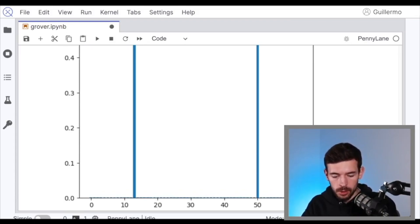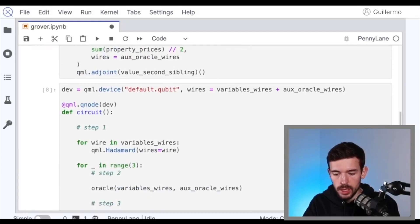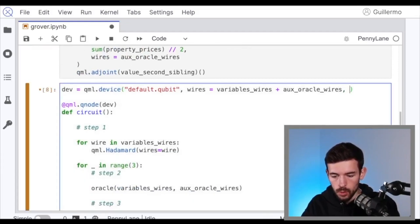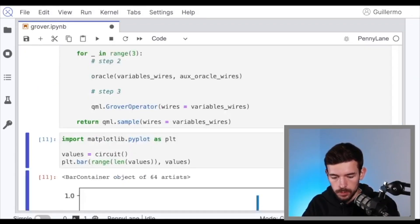But we have here some integers that are not actually the solution that we are expecting. So we have to get one sample to see what is actually the solution. In order to do that, we are just going to ask for one shot. So here, shots equal one, and instead of returning the probabilities, we are going to get a sample.